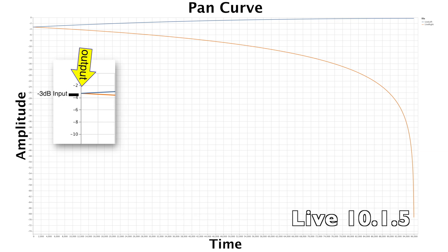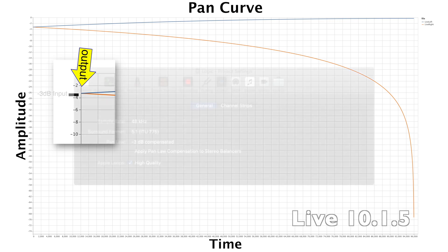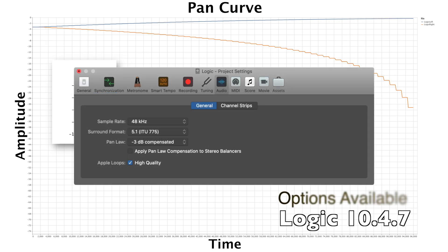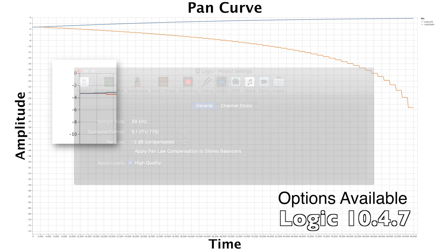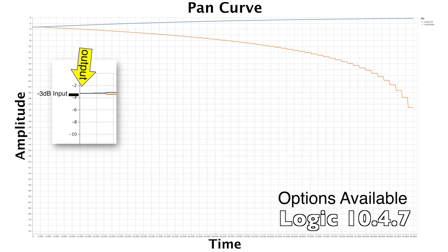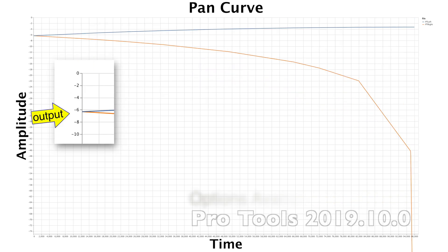Ableton Live is identical to FL Studio in almost every way — maybe they read the same white paper. Logic says it defaults to negative 3 decibels compensated, but it's actually 0 dB centered and compensated by 3 decibels on the sides, and the automation is terrible, as we'd expect from Logic by now.